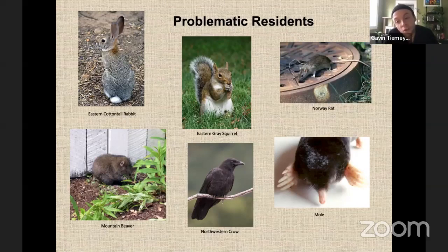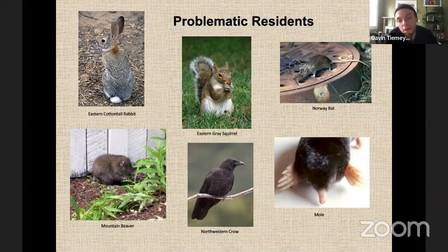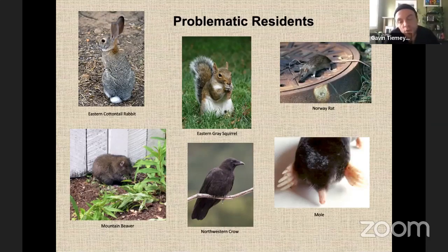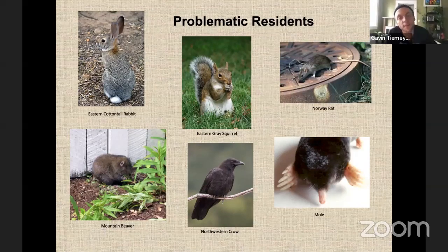The Norway rat is a rodent we share space with, even if we don't know about it. It can be a harbinger or carrier of disease — there's a lot of historical precedent for that. There are things you can do to reduce the presence of rats, like not leaving dog food out. Mountain beaver is an interesting one — I've never seen one. I think they're kind of rare. I would feel pretty happy to have a mountain beaver in my garden.